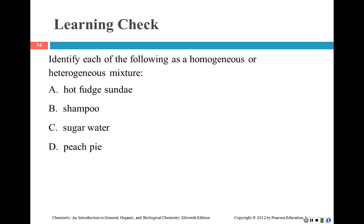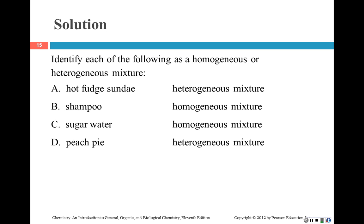Now identify each of the following as homogeneous or heterogeneous. Remember, if I took a sample, would I get the same exact thing every time? If so, that's homogeneous. A hot fudge sundae is a heterogeneous mixture. Shampoo is homogeneous. Sugar water is homogeneous. Peach pie — you might get a chunk of peach here and not there, so it would be different when sampled, making it a heterogeneous mixture.